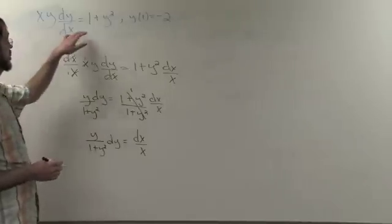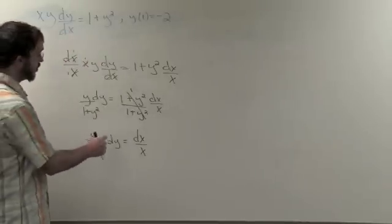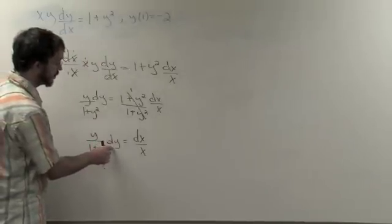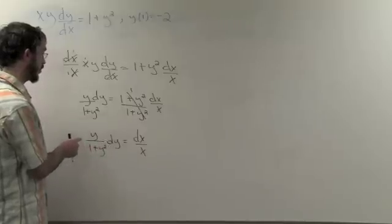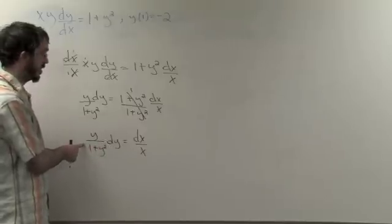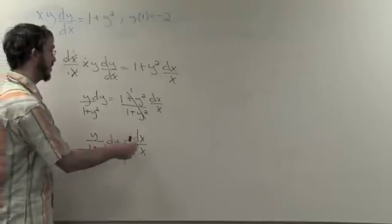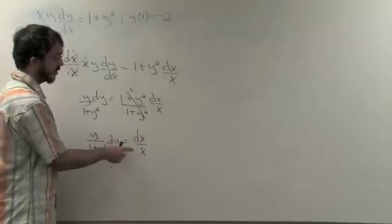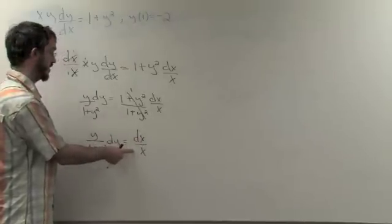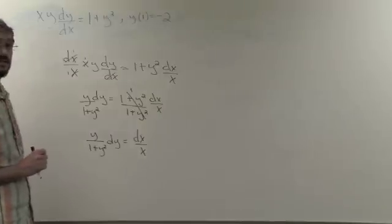Notice now that we have separated the original equation by getting the differential element of y isolated on one side of the equation, along with the corresponding function in terms of y on the same side, and then on the other side, have isolated the differential element of x along with the corresponding function in terms of x. Now we are ready to integrate.